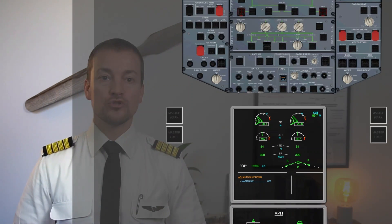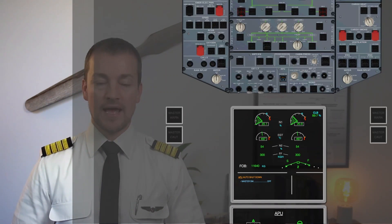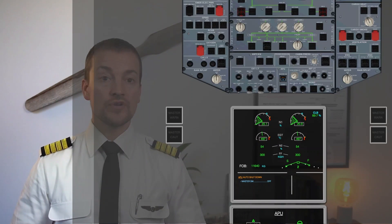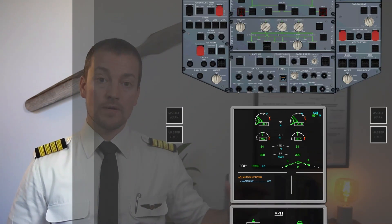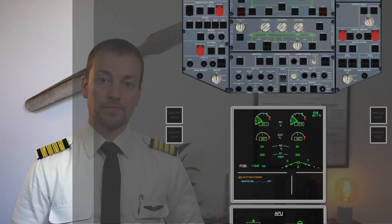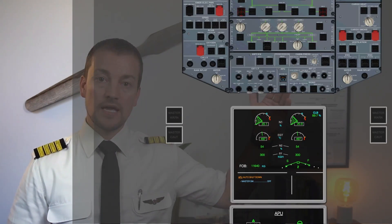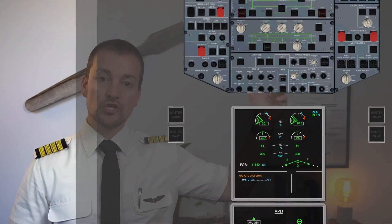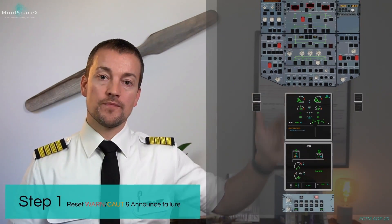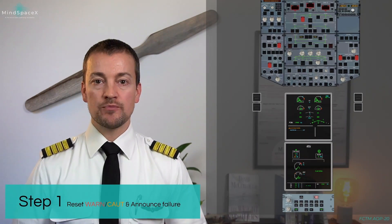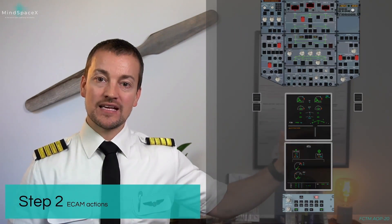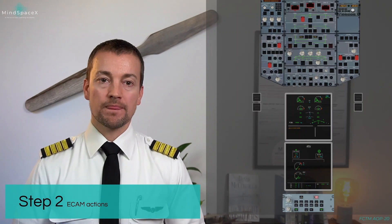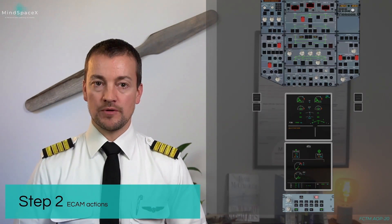Step two is to do the ECAM action. This is a read and do checklist. So, APU master switch off — APU master switch off. When I put the APU master switch off, that title line here will disappear and bring up the next item, if applicable.